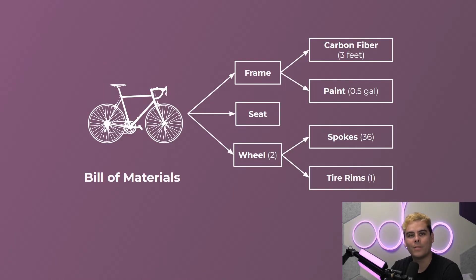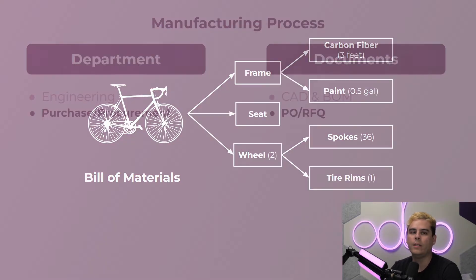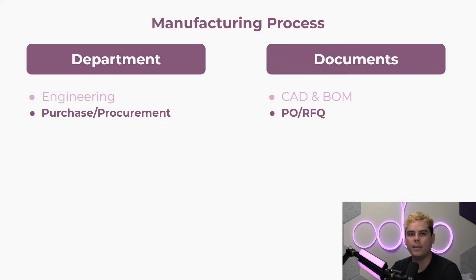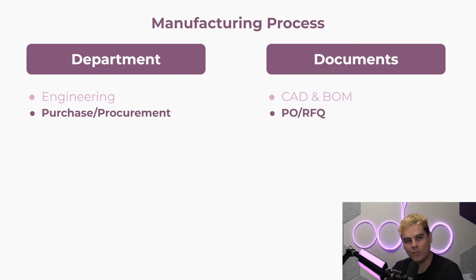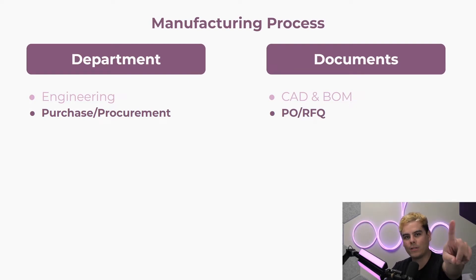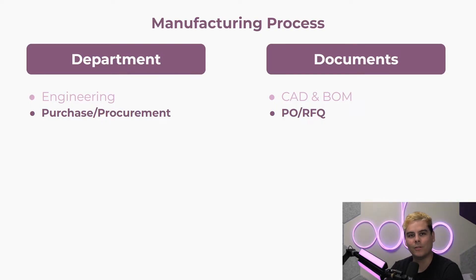Once the BOM is done, we'll need to start buying the items required in the manufacturing process. That responsibility falls to the purchase team, also known in a more professional setting as procurement. This team sources material vendors and sorts pricing lists.